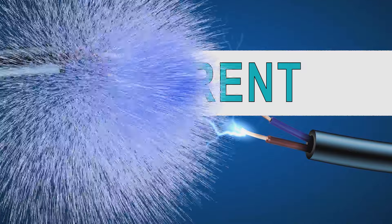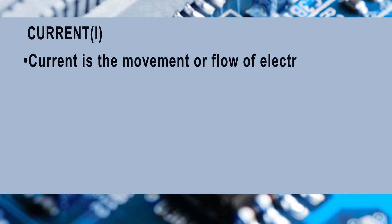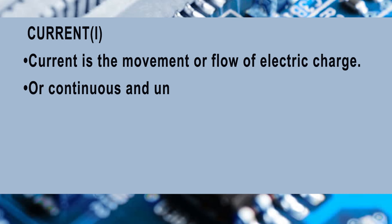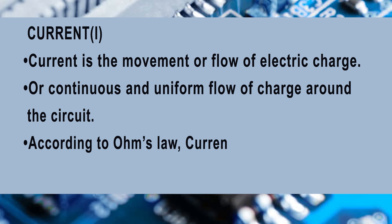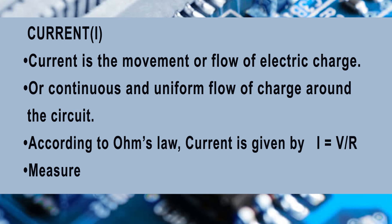Let's see about current. Current is the movement or flow of electric charge, or the continuous and uniform flow of charge around a circuit. According to Ohm's law, current is given by I = V / R, that is, current is equal to voltage divided by resistance. It is measured in units of amperes.